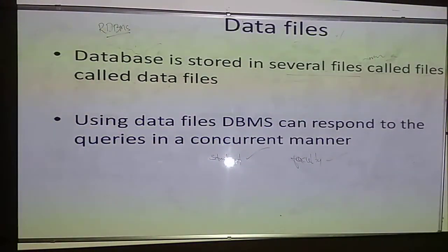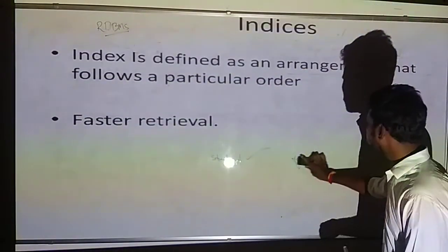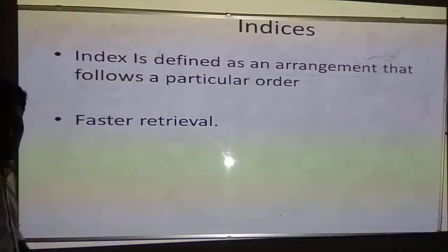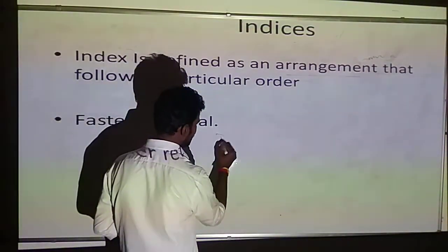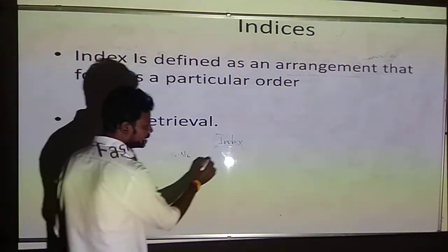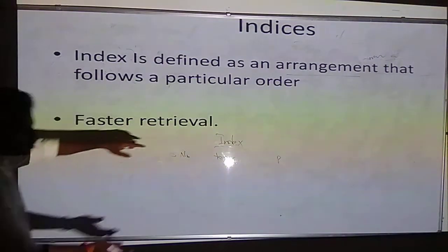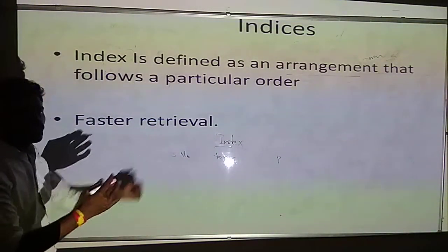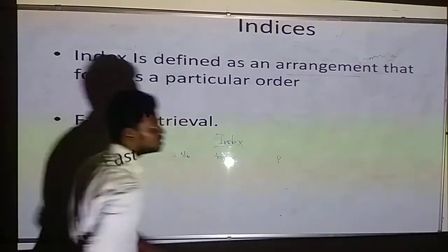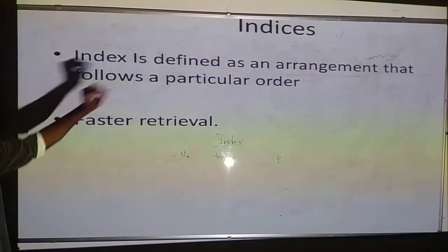One more terminology to discuss is indices. To explain indices, I'll use your book as an example. In every book at the starting, you will have a preface and after that you will have the index. In the index, you will have a serial number, the topic, and the page number where the topic is located. When you go to the index, you can directly go to the topic you want to see. If I want to see the content on indices, I go to the page number where that topic is listed, then go directly to that page.